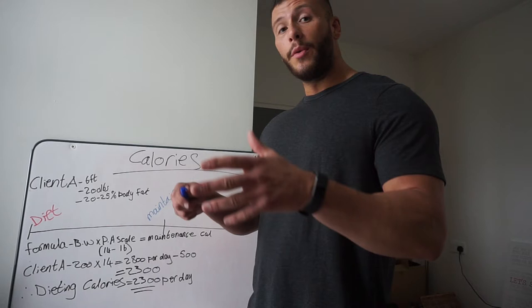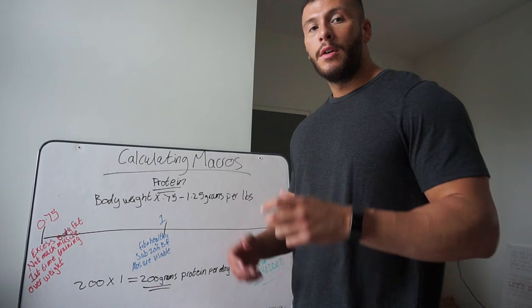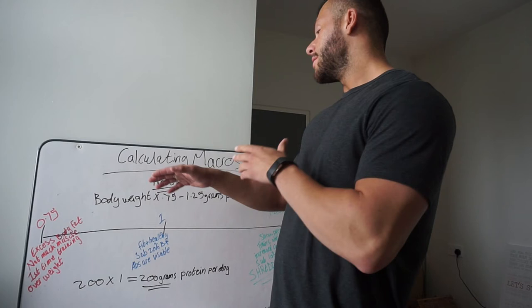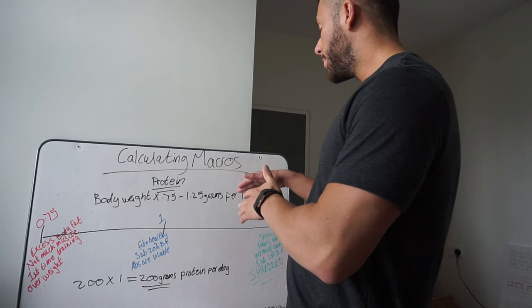Okay, so calculating our macros, we're going to start off with protein. The formula we're going to use is our body weight multiplied between a scale of 0.75 to 1.25 grams per pound. So this is our scale.